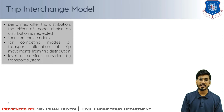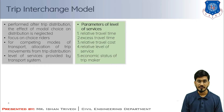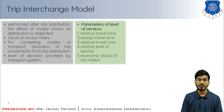Trip interchange models assume that the level of service provided by the transport systems is the main factor affecting the modal split. Parameters of level of service include: relative travel time, excess travel time, relative travel cost, relative level of service, and economic status of the trip maker.